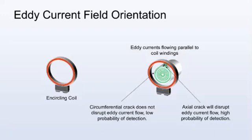Circumferential cracks oriented parallel to eddy currents do not disrupt eddy current flow and will not likely be detected. In the case of the rod shown here, an axial crack is oriented perpendicular to the eddy currents and will disrupt them.